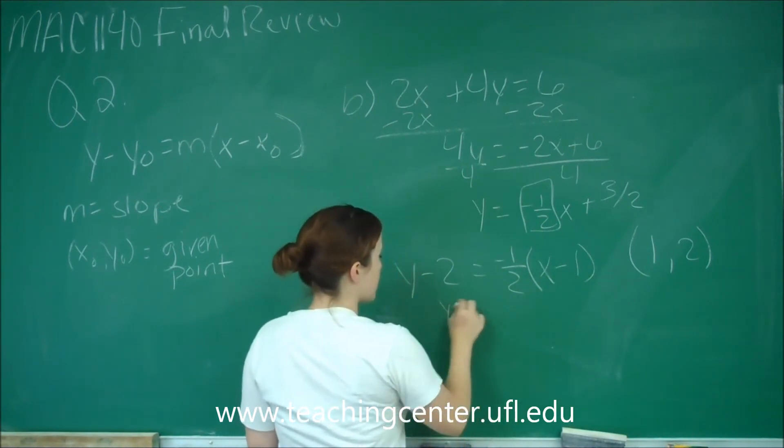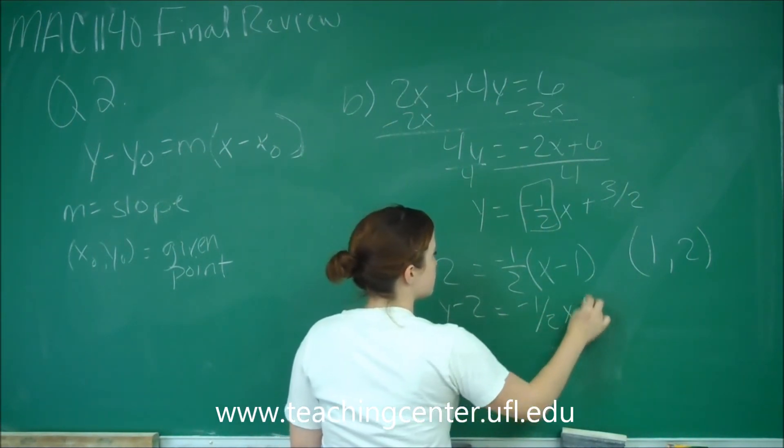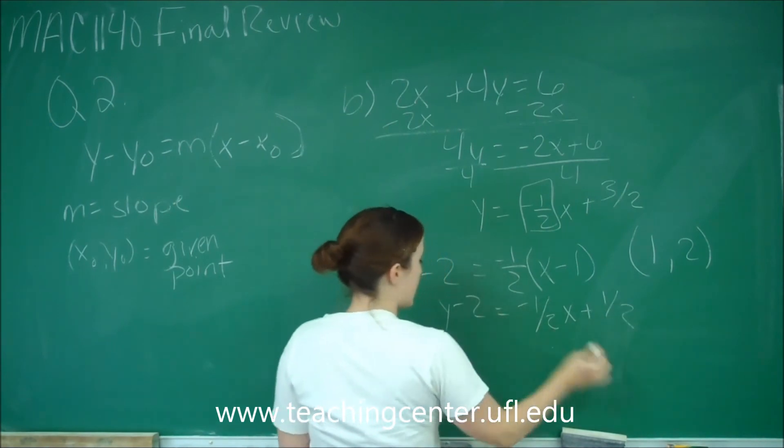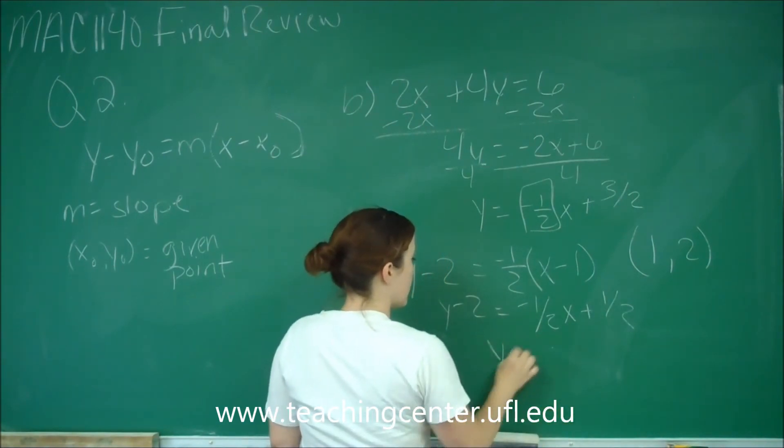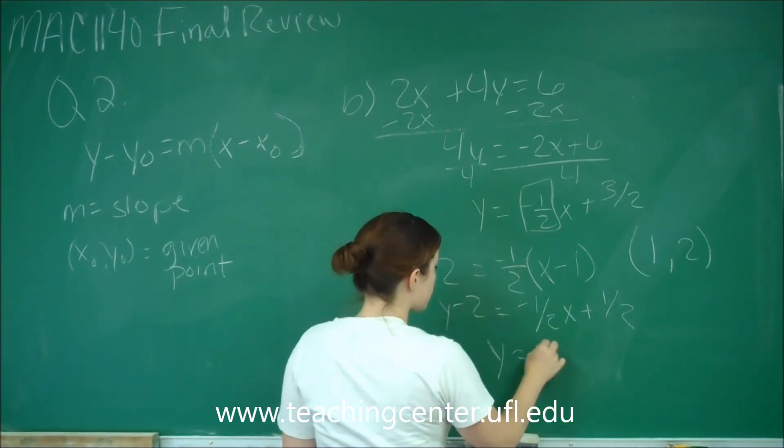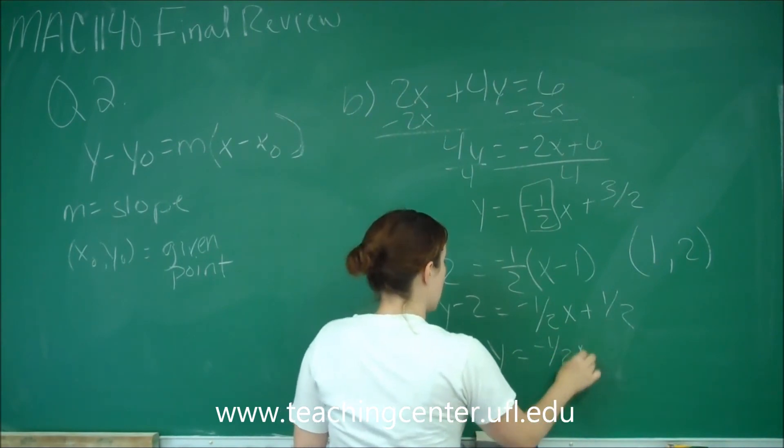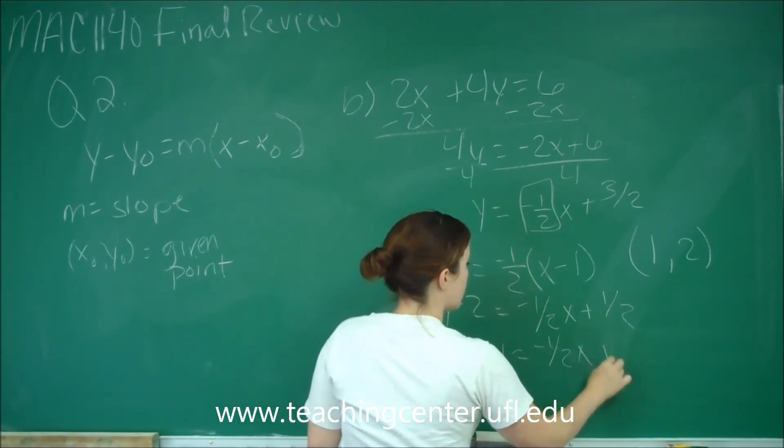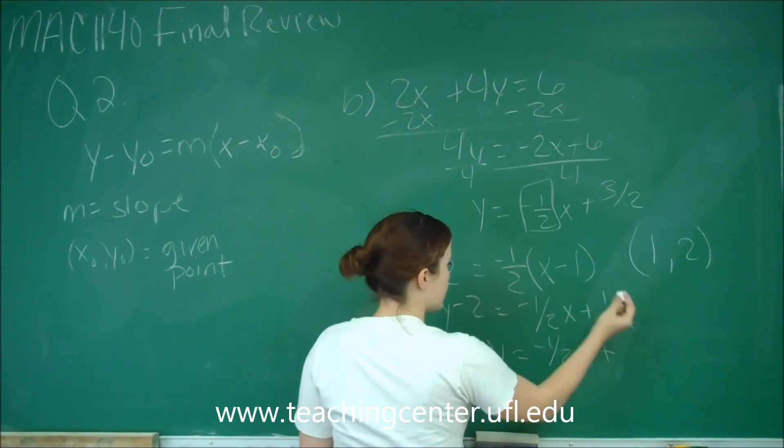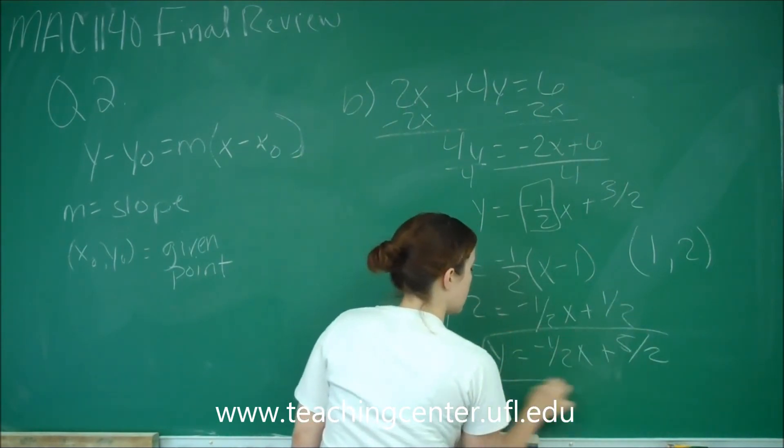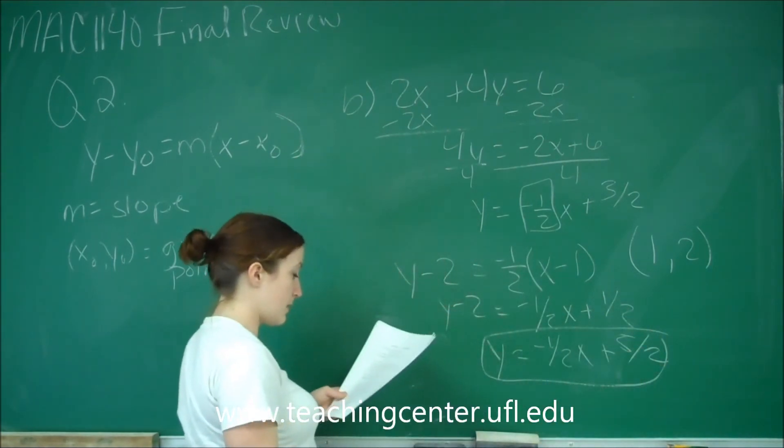So it's y minus 2 equals negative one-half x plus one-half. You add 2 and you get y equals negative one-half x plus, this is four-halves, so this is five-halves. And that is your answer for part b.